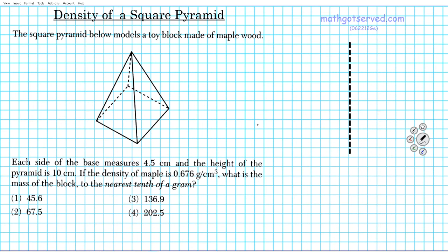We're going to be focusing on the square pyramid. In this particular situation we're going to be given the density and some other piece of information and we're going to be looking for what the mass of the square pyramid is.